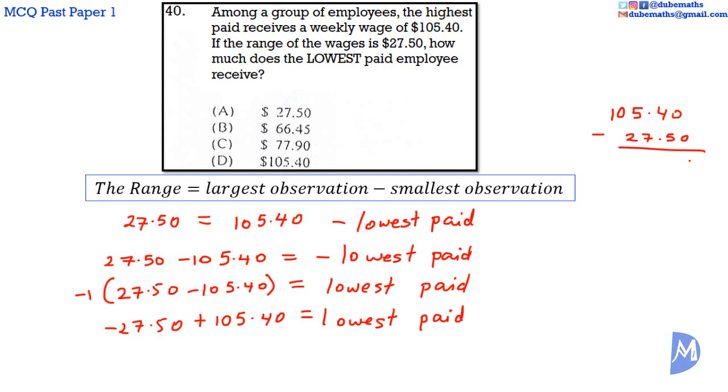0 subtract 0 is 0. 4 cannot subtract 5. So we convert 1 from the 5 here to the 4. When we convert 1, we are left with 4. 1 is equal to 10 tenths. So we have 10 plus 4 is 14. 14 subtract 5 equals 9. Decimal point below the others. 4 subtract 7. We need to borrow.